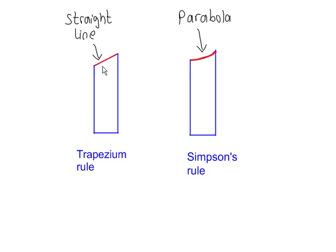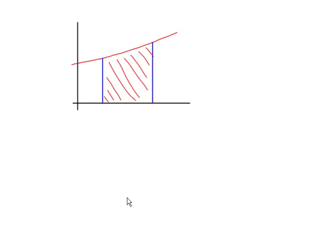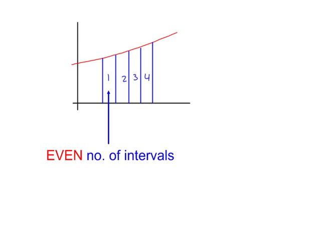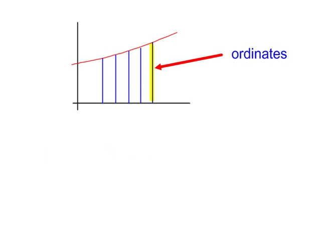So like this: straight line, parabola. So to work out an approximate value for the area under the curve here, divide the area into vertical strips. We must have an even number of strips or intervals. These are called ordinates. So we have five ordinates and we have four strips.